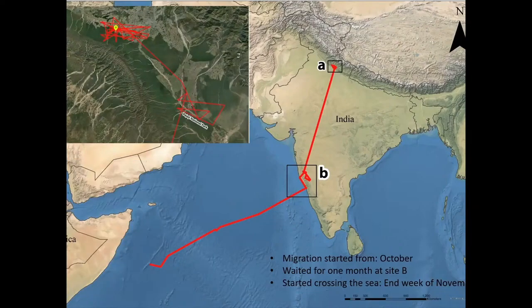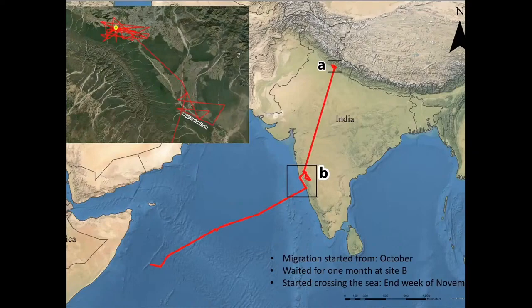Although the bird was tagged for only a few months, the study gave us several new insights. First, the bird stays till October — since it is a brood parasite with no parental care, we assumed it would leave immediately after laying eggs as in other cuckoo groups, but the parent stays till October before moving southward. Second, the bird crosses the Arabian Sea rather than taking the Arabian Peninsula, which would have been a much shorter route to Africa. Third, it stages in the coastal region for at least a month, probably waiting for favorable winds to cross the sea. More studies are needed across different parts of India to understand the full dynamics of this species' migration.